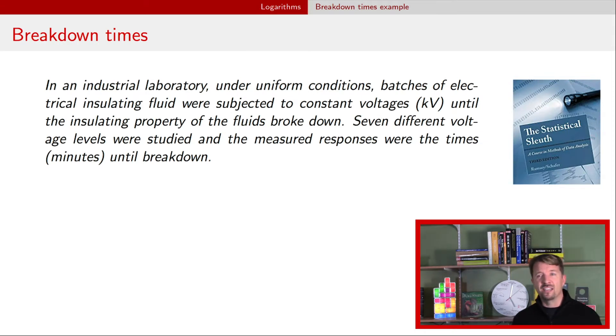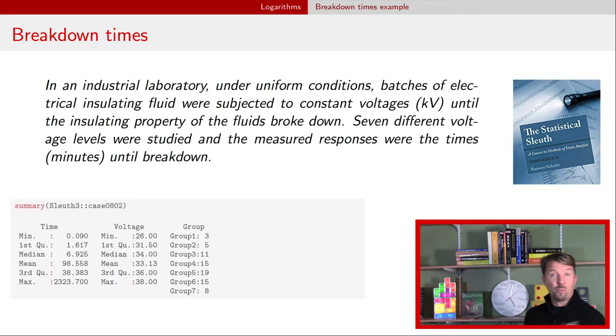All right, so we're going to use an example that comes from a textbook on regression called The Statistical Sleuth. I think this is a fabulous textbook. I highly recommend it. And no, I have not been paid to say this. But I have used it for a number of years in teaching regression. So this particular example comes from that textbook. And it says you're in an industrial laboratory, and you have batches of an electrical insulating fluid. And you subject them to some constant voltages, and you have some way of measuring when that fluid has broken down. And so the response is going to be the time it takes for that fluid to break down. As a quick summary, or maybe I should say this too, that this data set is in R. There's a sleuth3 package that has all of the data sets that are in this textbook. That's one of the things I think is great about the textbook is that they have all the data sets there for you to use and play around with.